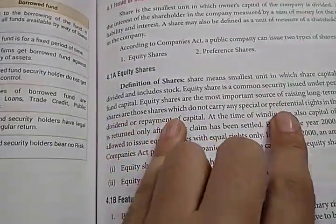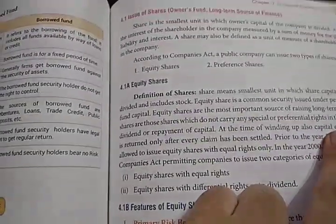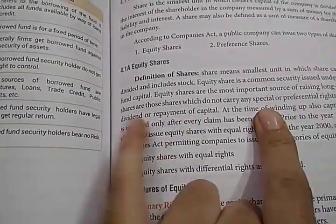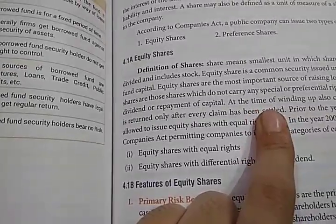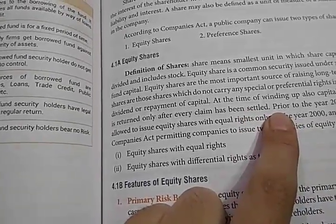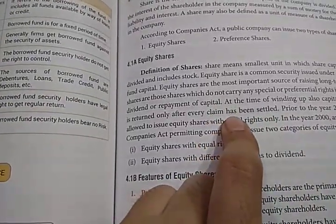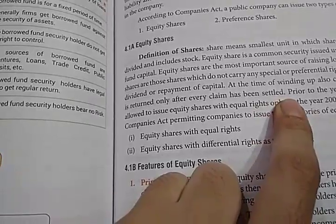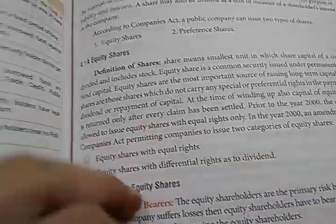Equity shares are those shares which do not carry any special or preferential rights in the payment of annual dividend or repayment of capital. Equity shareholders are not given any preference for annual dividend payment or interest payment — if there is profit, they get it; otherwise, they don't. At the time of winding up, the capital of equity shareholders is returned only after all other claims have been settled — after paying all debts, whatever remains, if anything, is returned to equity shareholders.